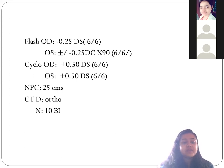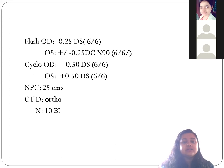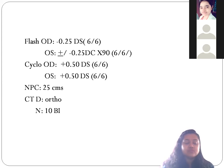For the left eye, there is no spherical component and a cylindrical component of minus 0.25 diopter at 90 degrees. With that, the patient is reading 6/6 — so the patient was having 6/6 minus 2.